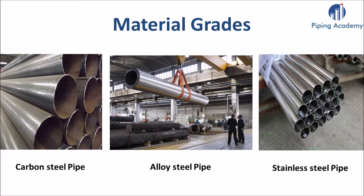Beginning on the very left you see a picture of carbon steel pipes. Then there are alloy steel grades and finally the group of stainless steels. Sometimes you will also hear people talking about black steel — when referring to black steel grades, carbon and alloy steel is what is meant. While when you hear someone say white steel, stainless steel is what is referred to.